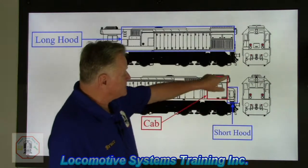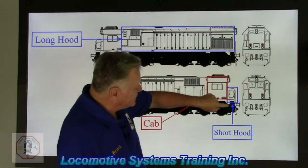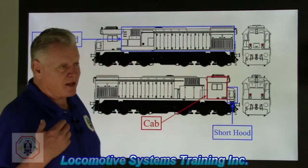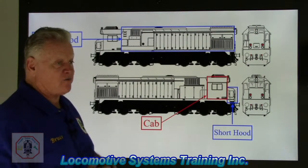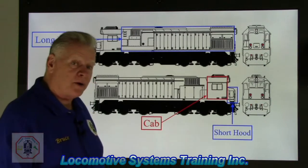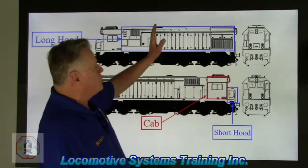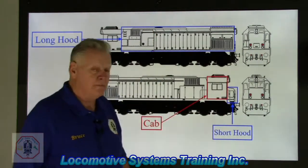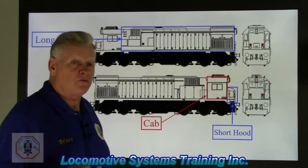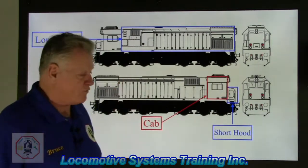Here's the cab, outlined in red. And on this locomotive, we've got a little tiny short hood. You might have things like a toilet, a sandbox for the front sanders, electronic equipment, air brake equipment — whatever you've got down there. It's called the short hood. So you have the long hood and the short hood, and you have the cab. Those are the three landmarks we're looking for to determine front, left, right, and rear.